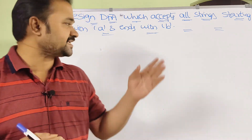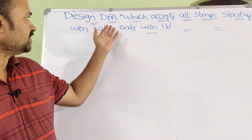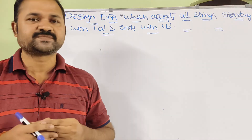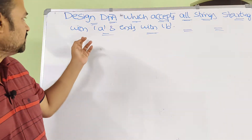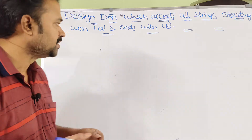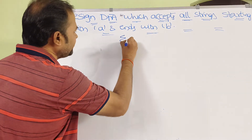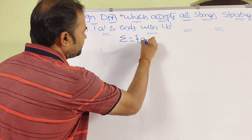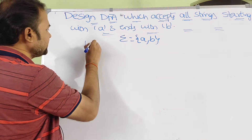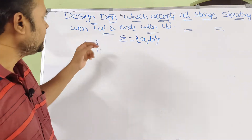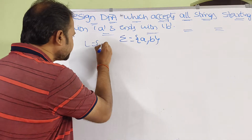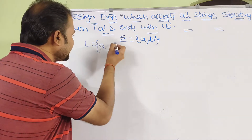Let's see this example: Design a DFA which accepts all strings starting with A and ending with B. The input alphabet is A comma B. The string starts with A and ends with B.